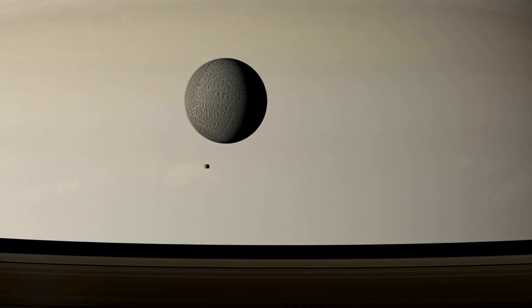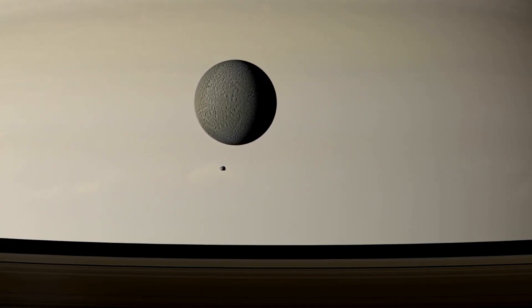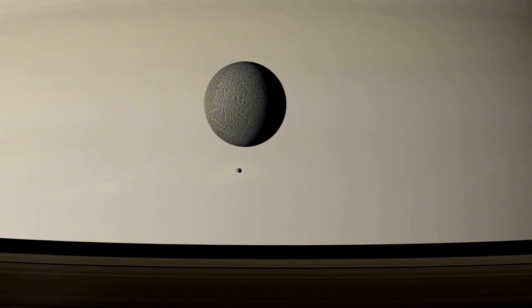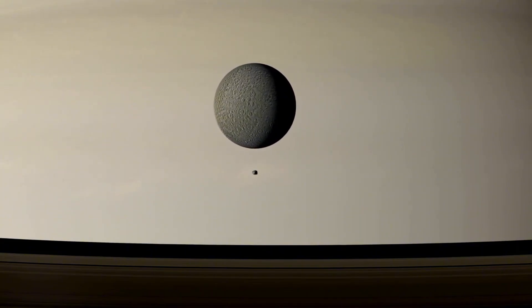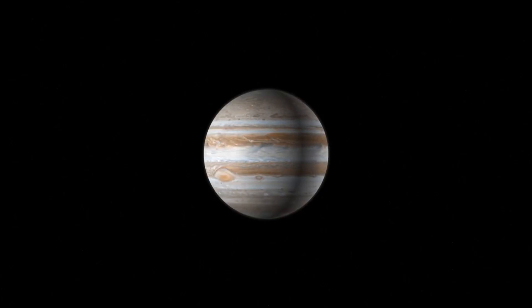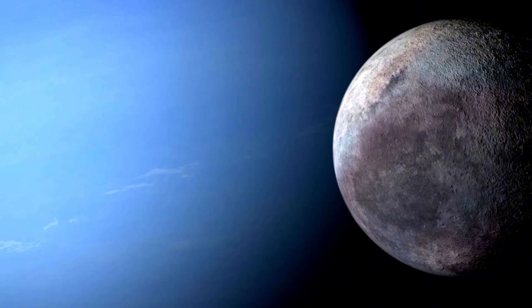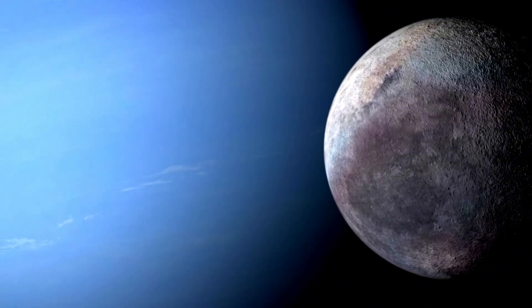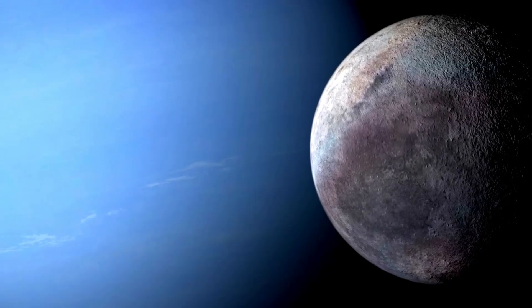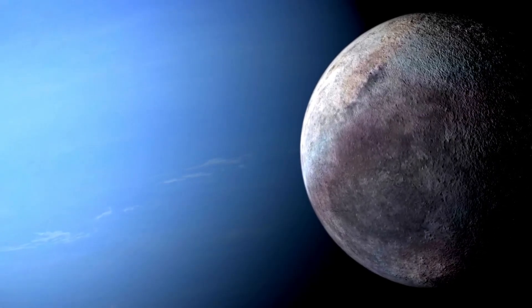One of the dangerous pictures really shows an object that seems, by all accounts, to be coasting across the outer layer of Pluto. This raises upsetting inquiries with respect to whether some sort of beforehand obscure life exists on this far-off world, or are we managing with a peculiar topographical peculiarity? Pluto might be little, but the narratives it needs to tell are large and full of shocks.